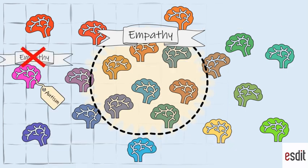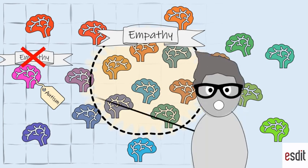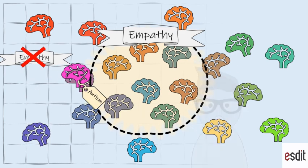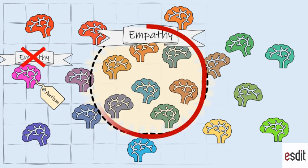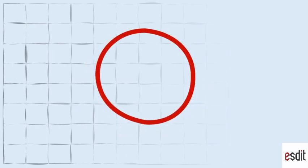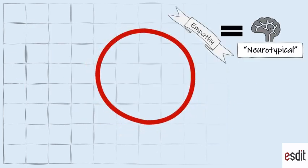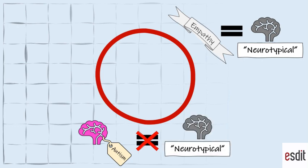It is often said that autistic people lack empathy, but the research that supports this idea made it a self-fulfilling prophecy. A circular reasoning. If you define and measure empathy in a way that only neurotypical empathy counts as real empathy, well, yeah, then you will find that those who are not neurotypical score lower.